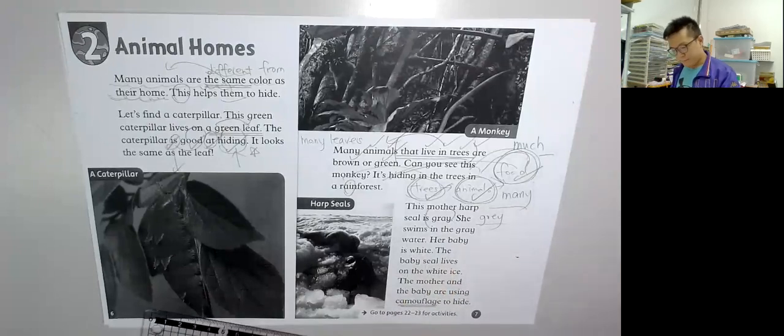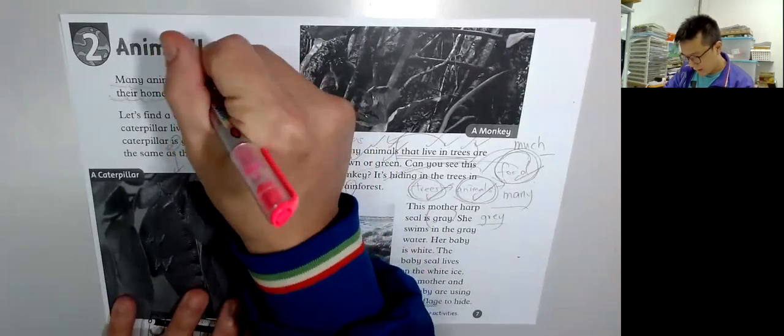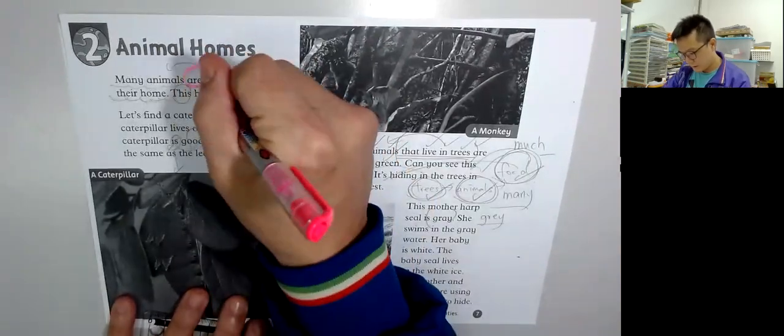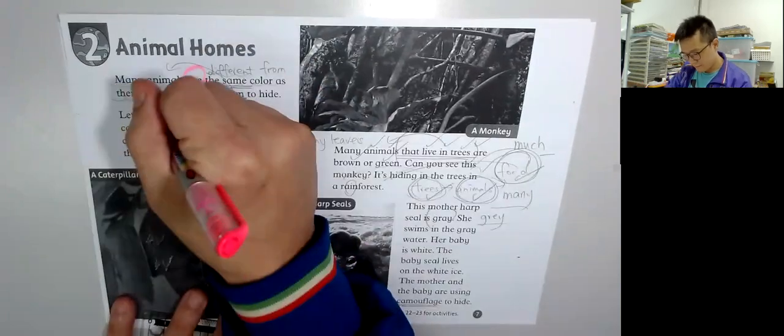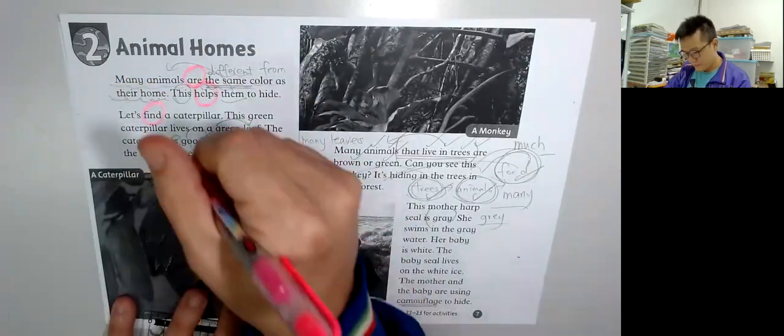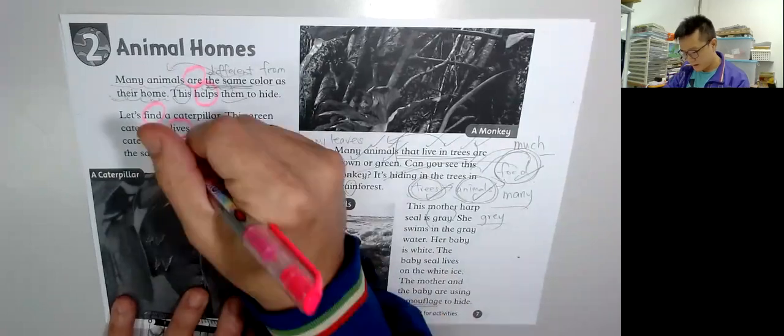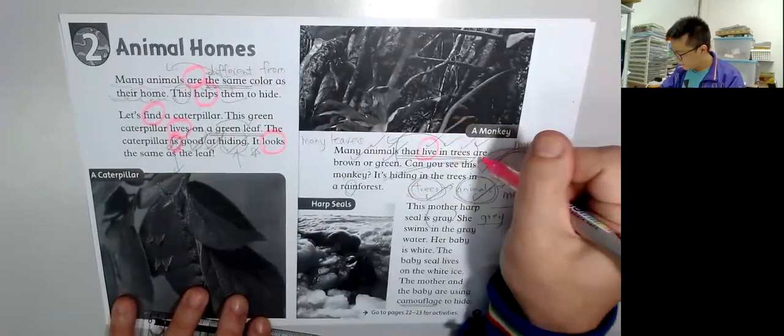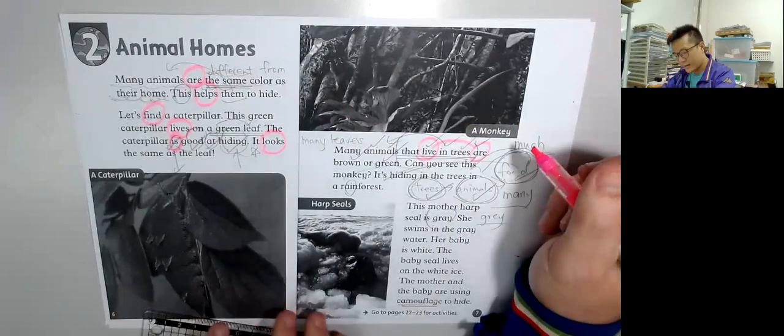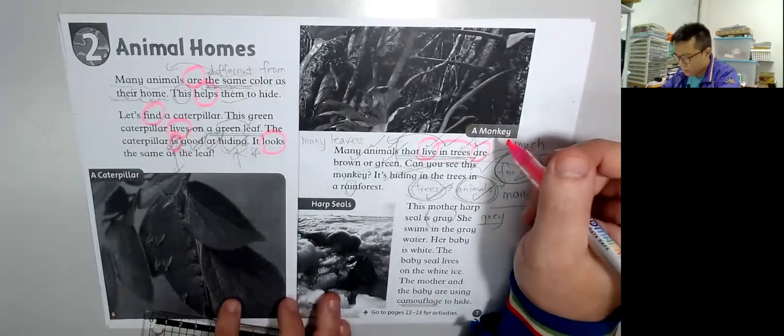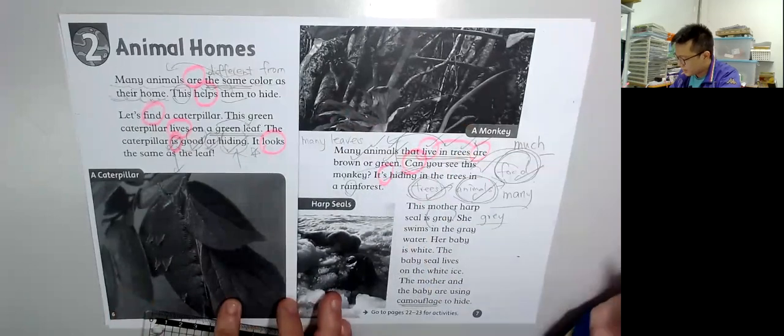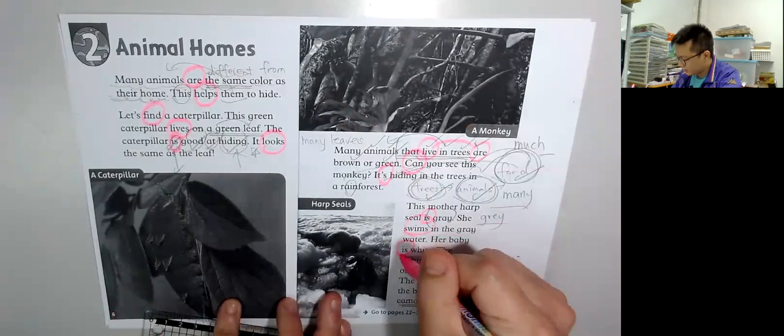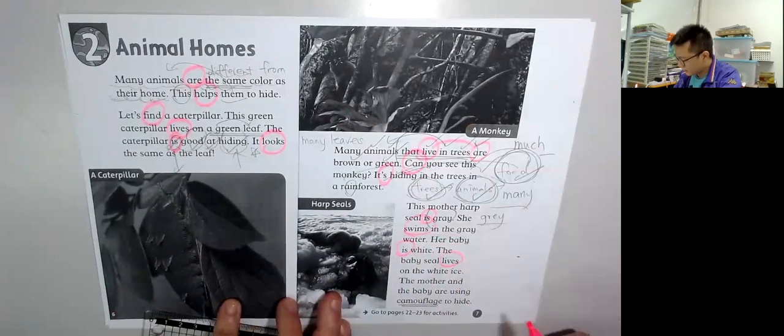一句可以有兩個或以上的動詞,但最少一個. Many animals are... This helps... Let's find... Leaves... It looks... Can... It's... Swims... Lives... Are.